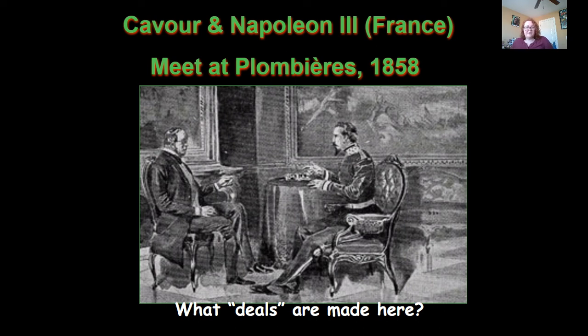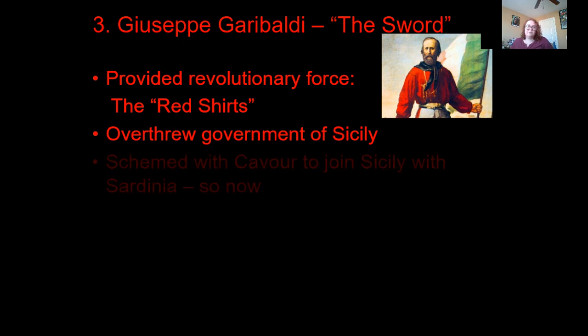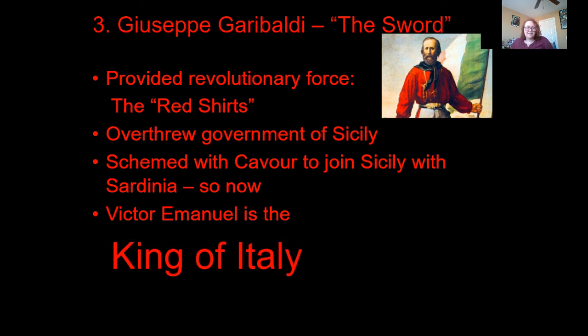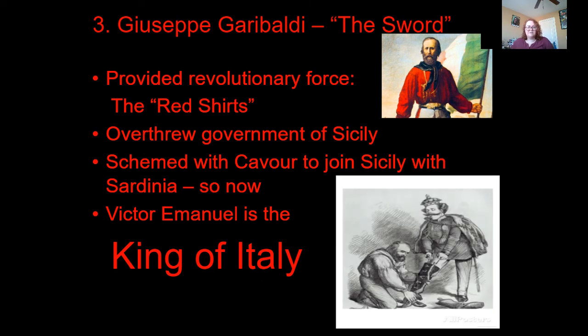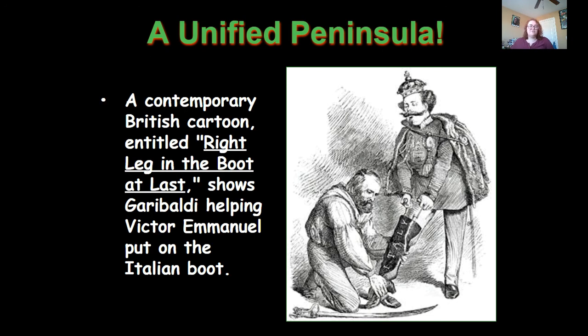Then you have Camillo di Cavour, considered the brain of all of this. He is the minister of Sardinia, which is one of the tiny islands that would become part of Italy. He used brilliant diplomatic maneuvers to unite most of the city-states by 1860, including discussions with Napoleon III of France, who controlled part of what would become Italy. Then you have Giuseppe Garibaldi, who provided the revolutionary forces known as the Red Shirts. He overthrew the government of Sicily and schemed with Cavour to join Sicily with Sardinia.